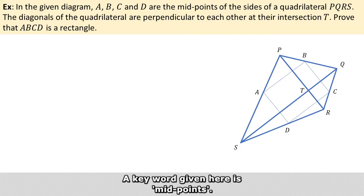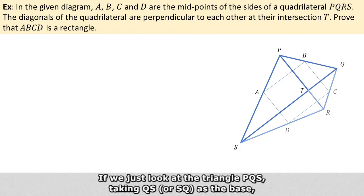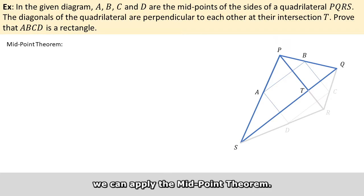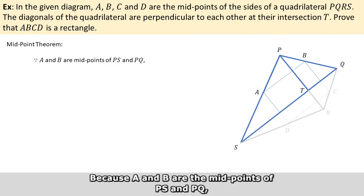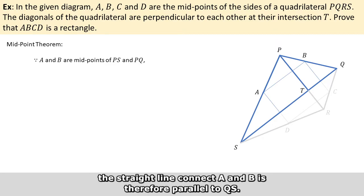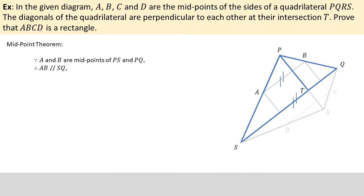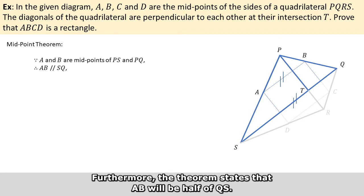A keyword given here is midpoints. If we look at just the triangle PQS, taking QS as the base, we can apply the midpoint theorem. Because A and B are the midpoints of PS and PQ, the straight line connecting A and B is therefore parallel to QS. Furthermore, the theorem states that AB will be half of QS.